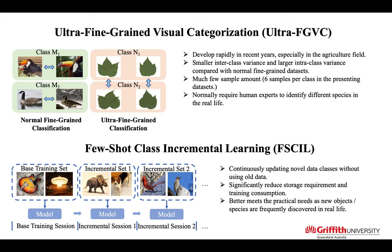The plant-based virtual fine-grained datasets are first published in 2021. Compared with normal fine-grained tasks, virtual fine-grained datasets have much smaller inter-class variances and larger intra-class variances, which normally require human experts to identify different species.